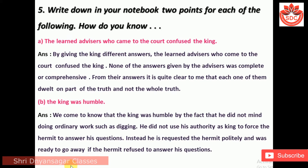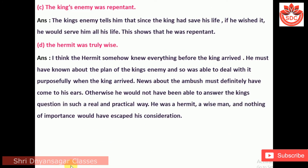B. How do you know the king was humble? Answer: We come to know that the king was humble by the fact that he did not mind doing ordinary work such as digging. He did not use his authority as king to force the hermit to answer his questions; instead, he requested the hermit politely and was ready to leave if the hermit refused to answer. C. How do you know the king's enemy was repentant? Answer: The king's enemy told him that since the king had saved his life, he would serve him faithfully all his life. This shows that he was repentant.